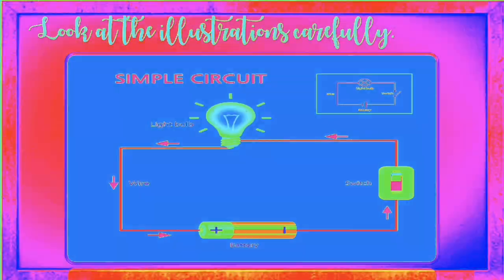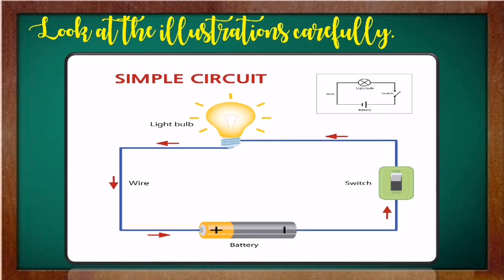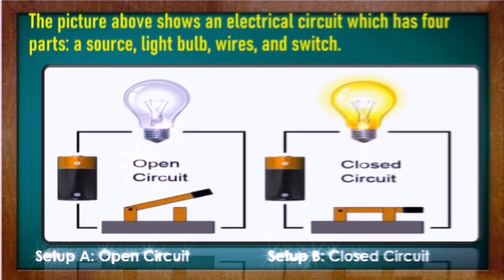Look at the illustrations carefully. This is an example of a simple circuit. Look what we have here. We have the light bulb. We have the wire. We have the battery. And we have the switch. Look at the arrows. This is an example of the electricity that flows here on the arrows through the wires. The picture above shows an electrical circuit which has four parts. The source, light bulb, wires, and switch.